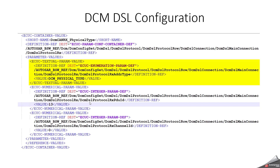To identify whether it is physical or functional, you have to use the macro DCM_PHYSICAL_TYPE. We also need to configure the DCM DSL Protocol Rx PDU ID and the Protocol Rx Channel ID. The most important parameter is the DCM DSL Protocol Rx Address Type, which informs the ECU whether the incoming request is physical or functional.